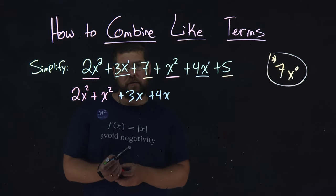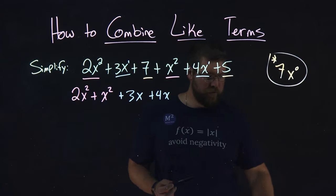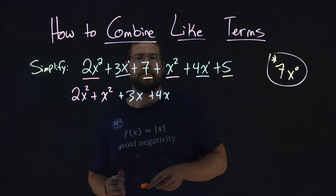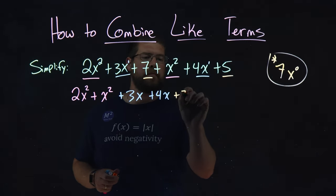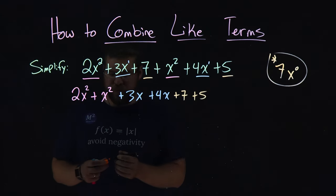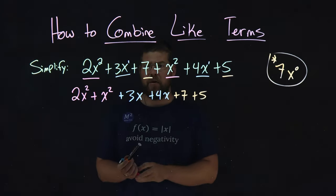Lastly, we have the 7 right here and then the 5. We brought them all down, so now they're all next to each other.